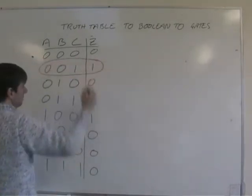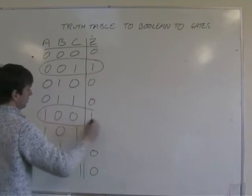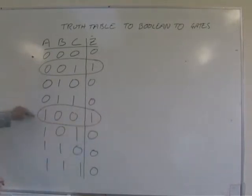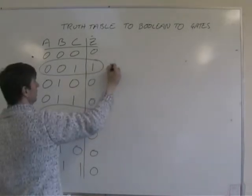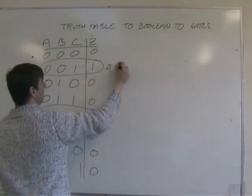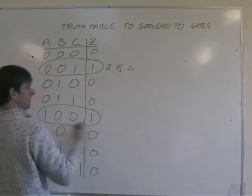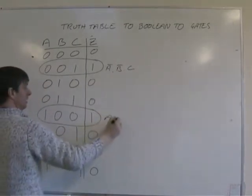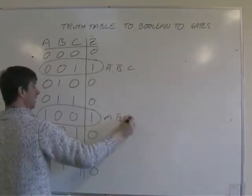Two things happen. Twice the output comes on. These are the two interesting lines. This line here, that's not A and not B and C. This one is A and not B and not C.